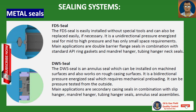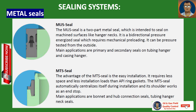The DWS seal is an annulus seal which can be installed on machined surfaces and also works on rough casing surfaces. It is a bidirectional pressure-energized seal which requires mechanical pre-loading and can be pressure tested from the outside. Main applications are secondary casing seals in combination with slip hangers, mandrel hangers, tubing hanger seals and annulus seal assemblies. The MUS seal is a two-part metal seal intended to seal on machined surfaces like hanger necks. It is a bidirectional pressure-energized seal requiring mechanical pre-loading, pressure testable from outside. Main applications are primary and secondary seals on tubing hangers and casing hangers.